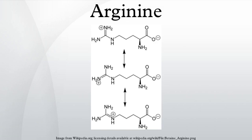Arginine is an amino acid, first isolated in 1886. The L-form is one of the 20 most common natural amino acids.